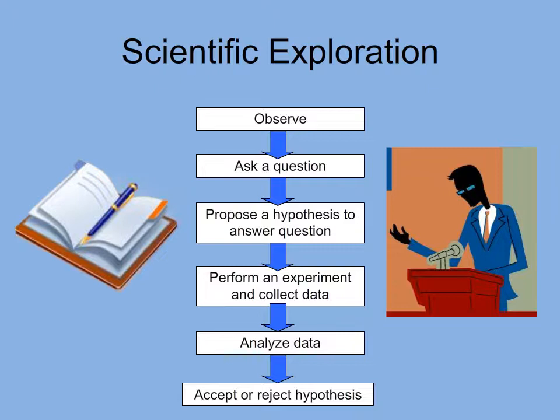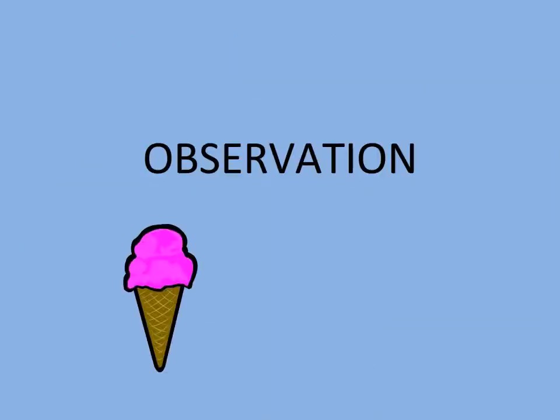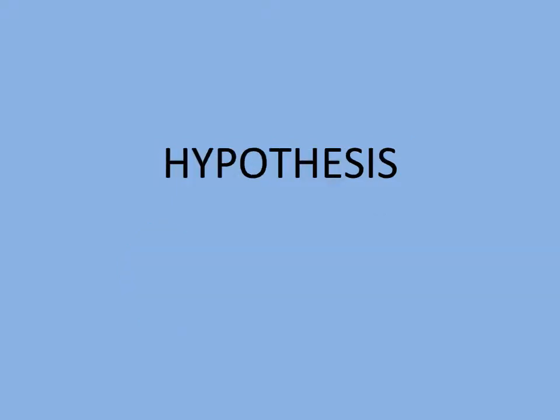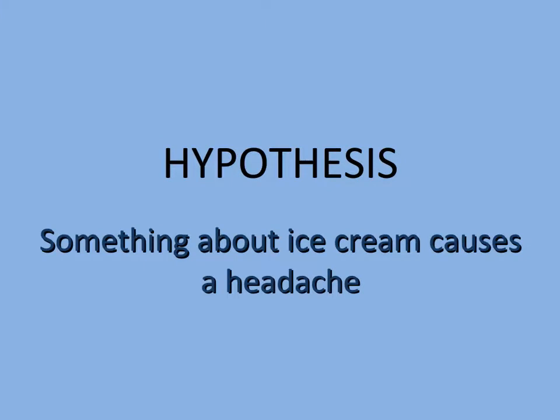Let's go through these steps with an example. You eat an ice cream cone rather quickly and observe that you get a splitting headache. Why did you get the headache? Let's answer that question to form our hypothesis. There must be something about ice cream that causes a headache. But is that a good hypothesis?